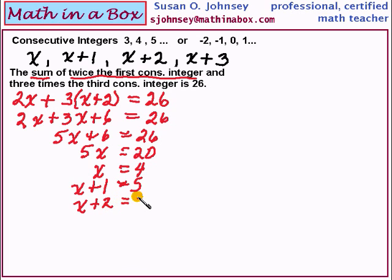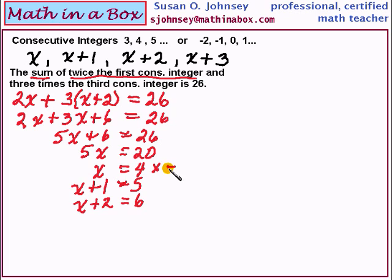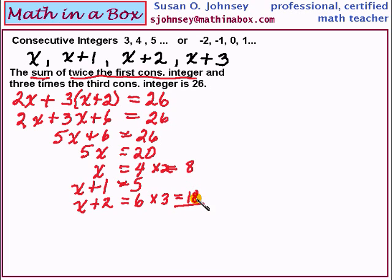You can always go back and check this. Remember the sum of twice the first: the first was 4, and if I multiply that by 2 I get 8. We were supposed to multiply the third one by 3, and that gives 18. If I add those to find the sum I will have 26, which is the answer we wanted at the beginning of the problem.